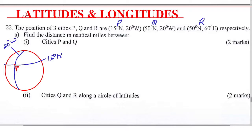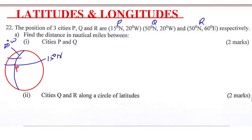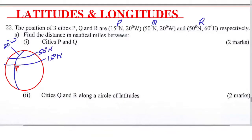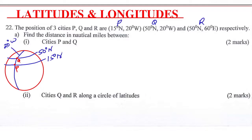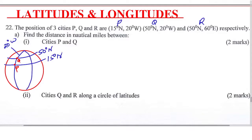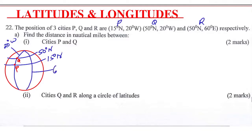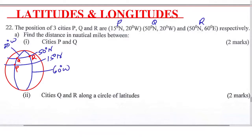Then Q is 50 degrees north — 50 degrees north will be here — and 20 degrees west. So this is the position of Q. Then R is 50 degrees north, 60 degrees east. So 60 degrees east would be over here, and therefore R is here. So now you can see the three positions of P, Q, and R.